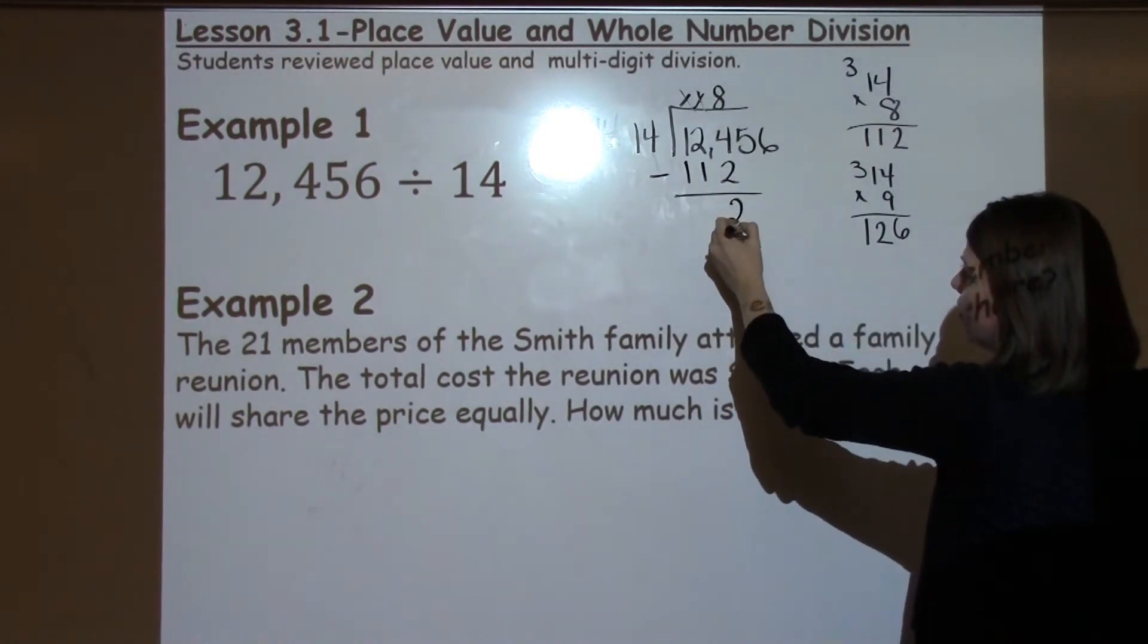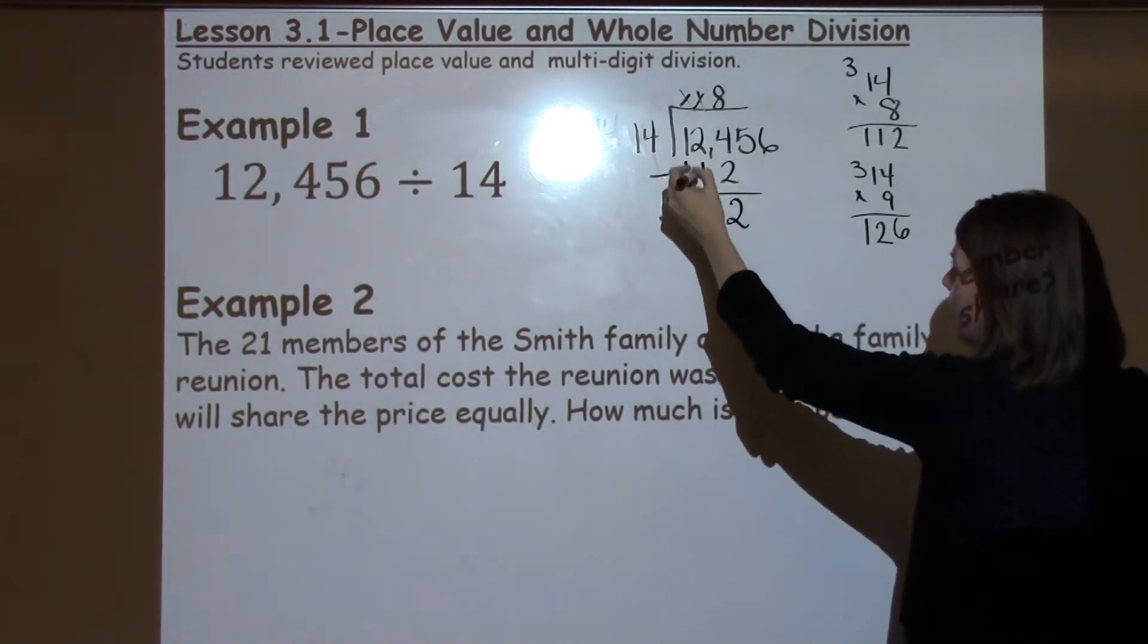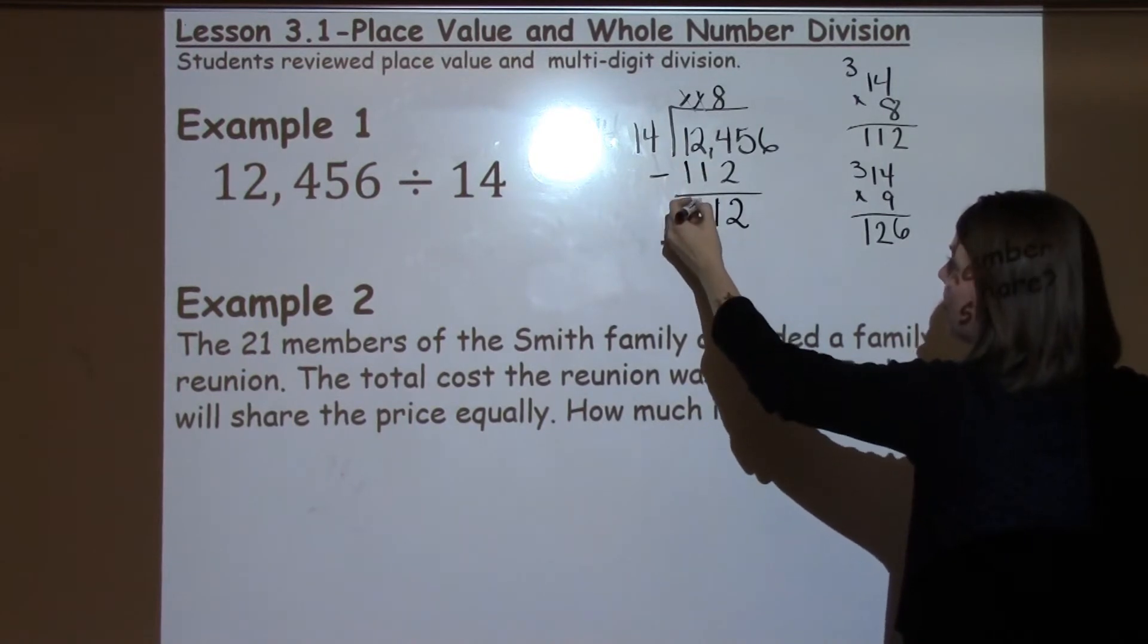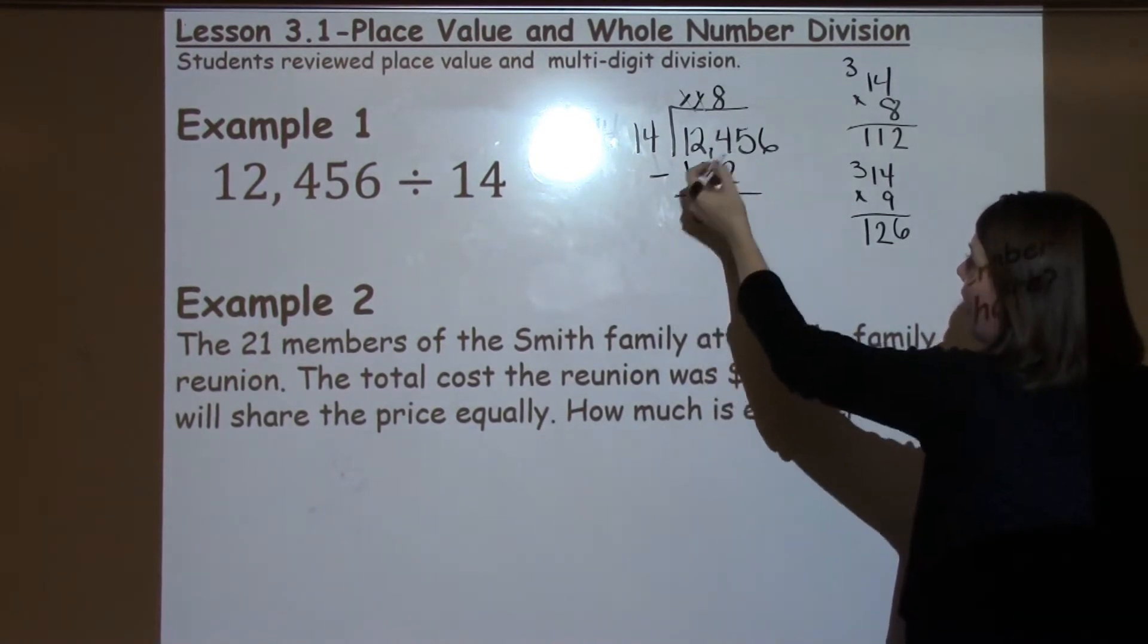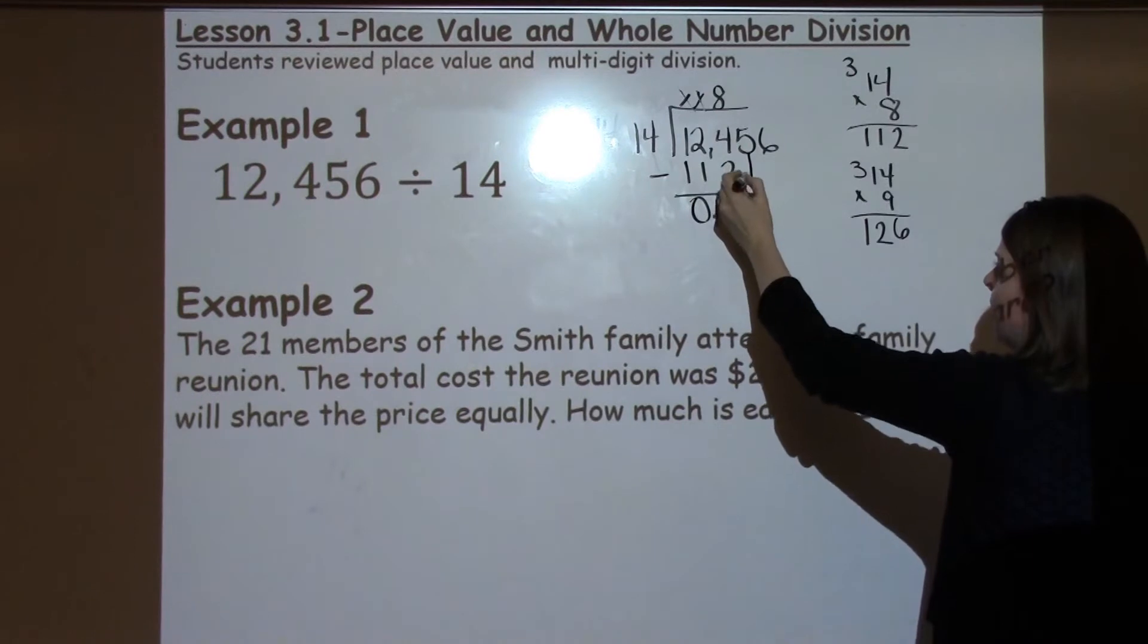I'm going to go ahead and subtract. 4 minus 2 is 2. 2 minus 1 is 1. 1 minus 1 is 0. I need to go ahead and bring down my 5.